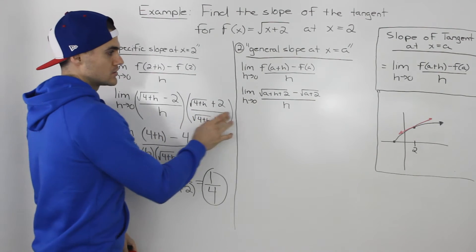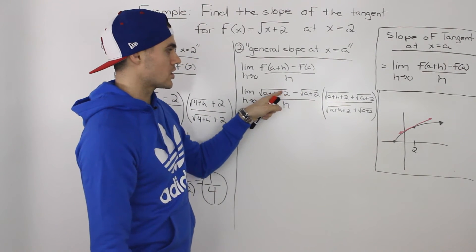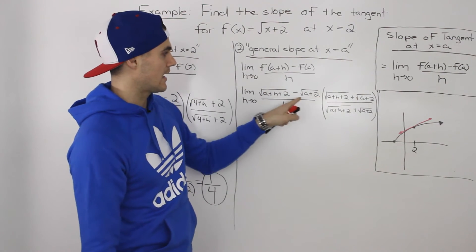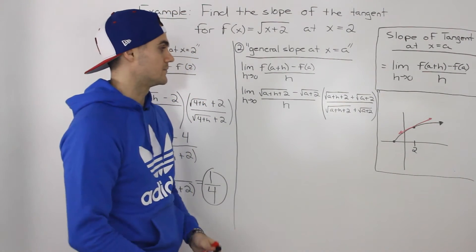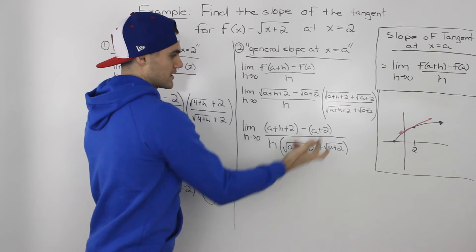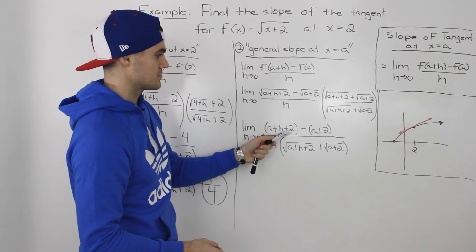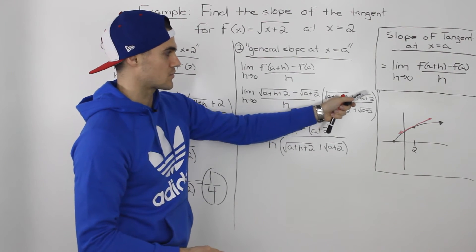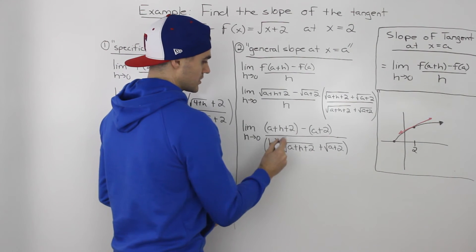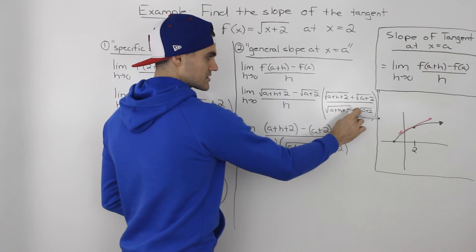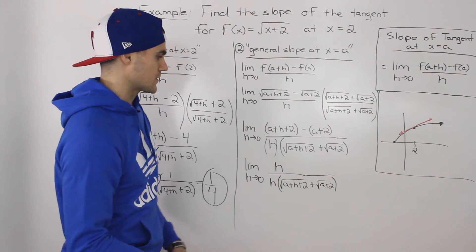Similarly to before, to get rid of the h in the denominator we rationalize the numerator by multiplying by its conjugate — the same end terms but with the sign in the middle changed — placing it in the denominator as well, so we're multiplying by 1. Multiplying the two-term expression by its conjugate, the square root of a plus h plus 2 times itself gives a plus h plus 2, and negative the square root of a plus 2 times itself gives minus (a plus 2). The h and the square root expression stay separate in the denominator. Simplifying the numerator, the a's and the 2s all cancel, leaving just h.